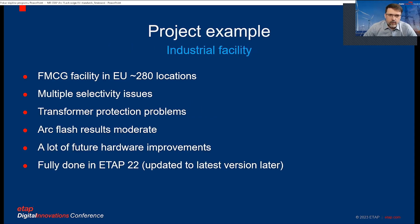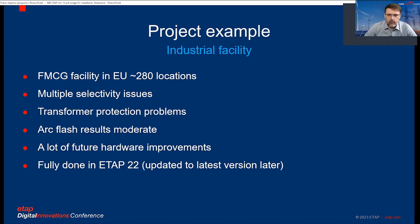So that was pre-version 22. Luckily we now have ETAV 22. I want to show you the project example I did for both IEEE and DGUV, modified slightly for this presentation. The project has 280 locations — it's a fast-moving consumer goods site. There were multiple selectivity issues, transformer protection issues. Initial results were actually low to medium — not very high — but you'll see the influence of that.